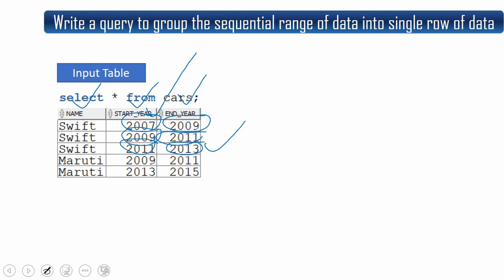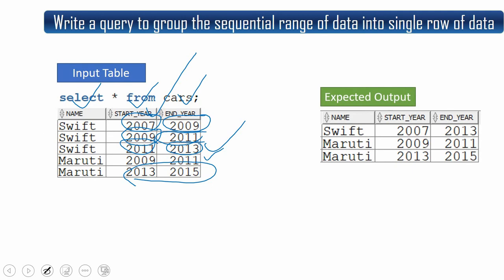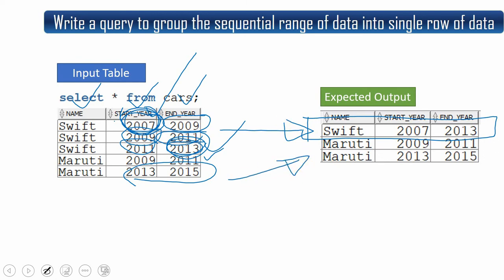For Maruti, it starts from 2009 to 2011, whereas the next row starts from 2013 to 2015. So in this case it is not a continuous year — there is a discontinuity between 2011 and 2013. The expectation is: if it is continuous, we just need to give the minimum year to the maximum year, aggregating the data into a range. For Swift, that means one row from 2007 to 2013. For Maruti, there are two groups: 2009 to 2011 and 2013 to 2015, which we display as-is.